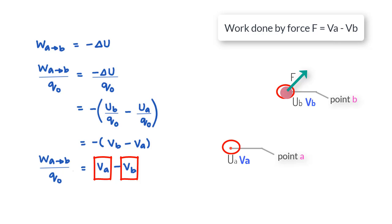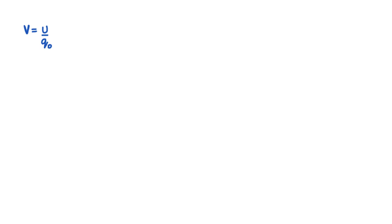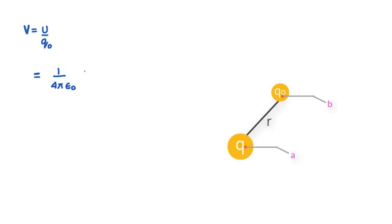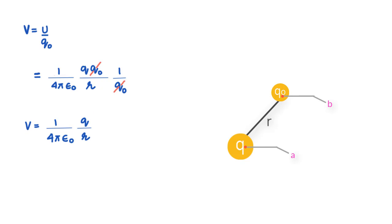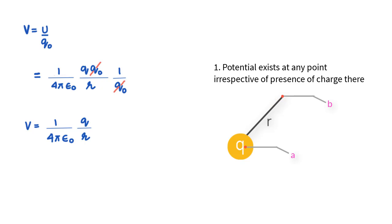Having understood what potential is, the next question is how do we measure it. Expanding the definition V = potential energy per unit charge, we write this as (1/4πε) × QQ0/R × (1/Q0), and we see that the Q0 value gets eliminated from the expression for potential V. This tells us that potential exists at a point at distance R from charge Q whether or not you have another charge there.